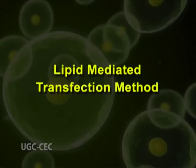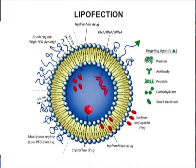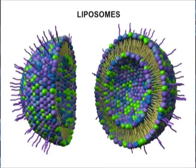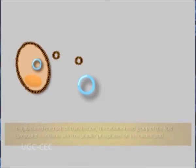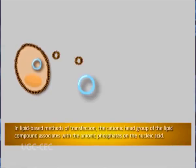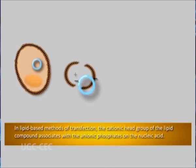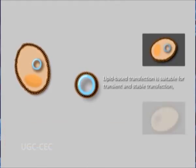Lipid-mediated transfection method: The delivery of DNA inside cells mediated by liposomes is known as lipofection. This is a commonly used and efficient method for gene delivery. Liposomes are small vesicles prepared by lipid membranes and can be prepared using cationic lipids conjugated with polymers. Antibodies or ligands may also be attached for targeting the delivery, which enhances efficiency. The cationic liposomes bind and fuse with the cells efficiently, and the fusion is followed by delivery of DNA inside the cells, resulting in transfection.